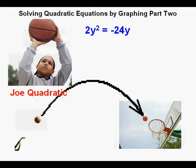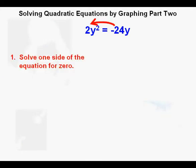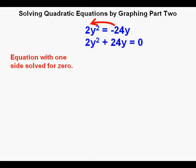Now let's look at the quadratic equation 2y squared equals negative 24y. Step 1: we need to make one side zero. That is most easily done by moving the negative 24y to the other side of the equation, which effectively adds 24y to both sides. On the other side it becomes positive 24y, and the right side is left with zero.